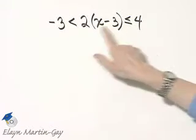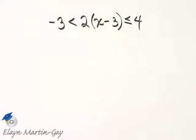Notice this is a compound inequality. It contains two inequality symbols. So we will solve for x by getting x by itself in the middle.